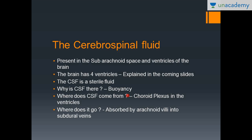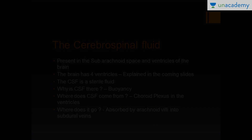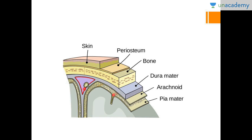The CSF comes from a structure known as the choroid plexus, located in the ventricles. The CSF is then absorbed by arachnoid villi into the subdural veins. In the picture, you can see small mushroom-like structures protruding from the arachnoid mater into the venous sinus — this is where CSF from the subarachnoid space is absorbed.